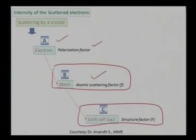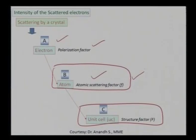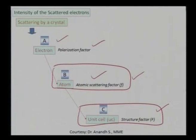The polarization factor arises from the electron. The whole atom has many electrons, so the atomic scattering factor depends on atomic number. The structure factor depends on so many atoms that constitute or define a particular unit cell. This is how intensity basically varies.